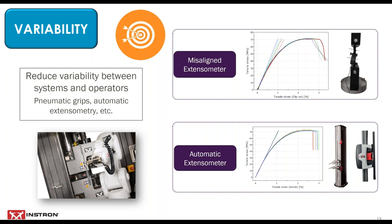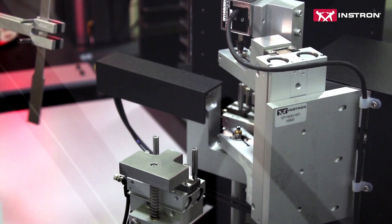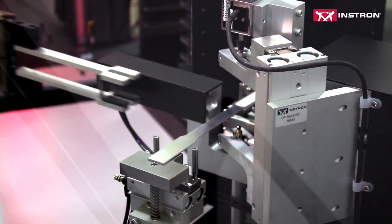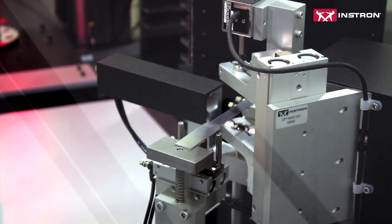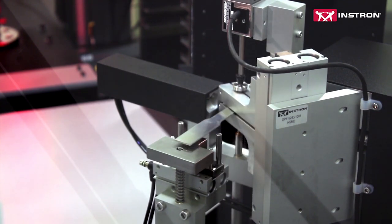I'd like to play a quick video showing an enhanced measurement station to demonstrate one of Instron's tools that can help eliminate variability. This tool can be used on both fully automated and semi-automated systems. What you're seeing here is a horizontal specimen measurement device that is part of a fully automated work cell. This device will take three width and three thickness measurements automatically and then return the maximum, minimum, or mean of the three values to Bluehill Universal. It can measure a wide range of specimens, including ones that are bent, bowed, and twisted.